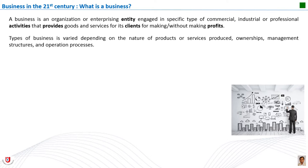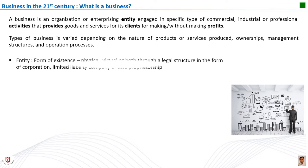Types of business vary depending on the nature of products or services produced, ownership, management, business structures, and operation processes. There are many types of business entities defined in the legal systems of various countries. These include corporations, cooperatives, partnerships, sole traders, limited liability, and other specifically permitted legal types of entities. The specific rules vary by country and by state or province.